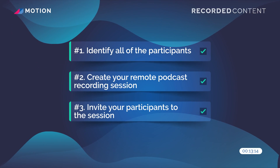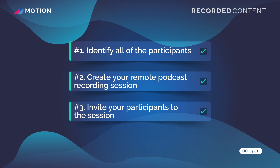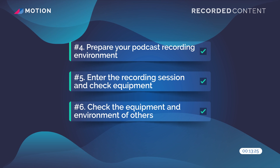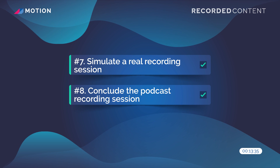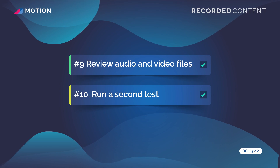To recap, your 10 steps on how to test your remote podcast recording software and equipment are: identify all participants for the test scenario, create your recording session whether using Zoom or Riverside, invite participants and share materials, prepare your environment just like a real session, enter the recording session and check your equipment in the green room, check the equipment and environment of other participants, simulate a real recording session with dialogue, conclude the session and check all files, and finally run a second test. If you do all of that, your first recording should go off hopefully without a hitch and you'll succeed faster on that first episode.